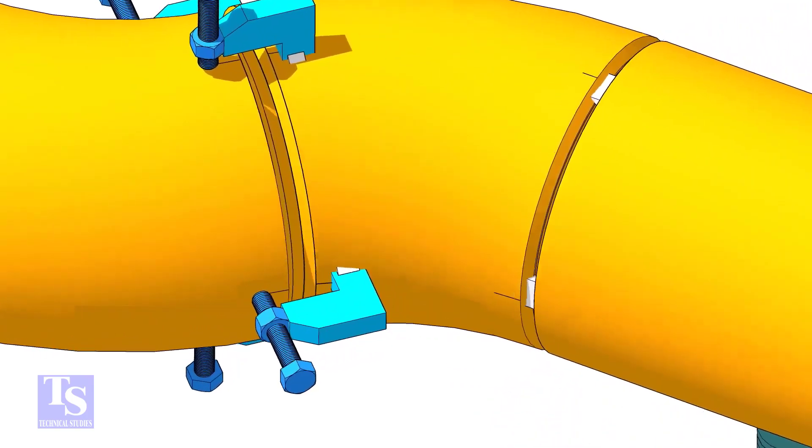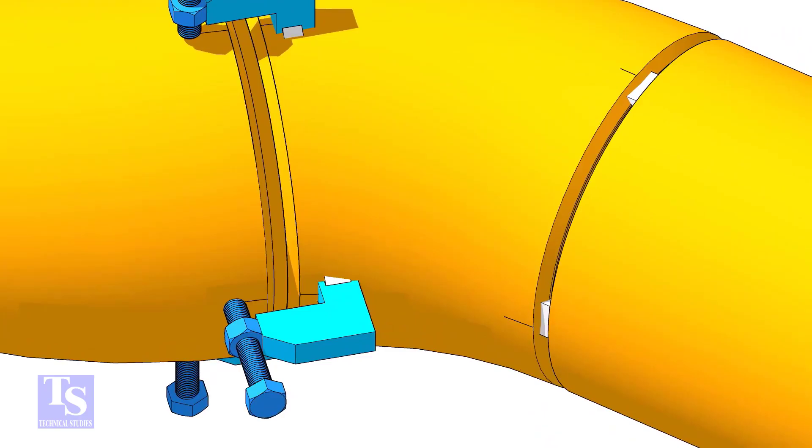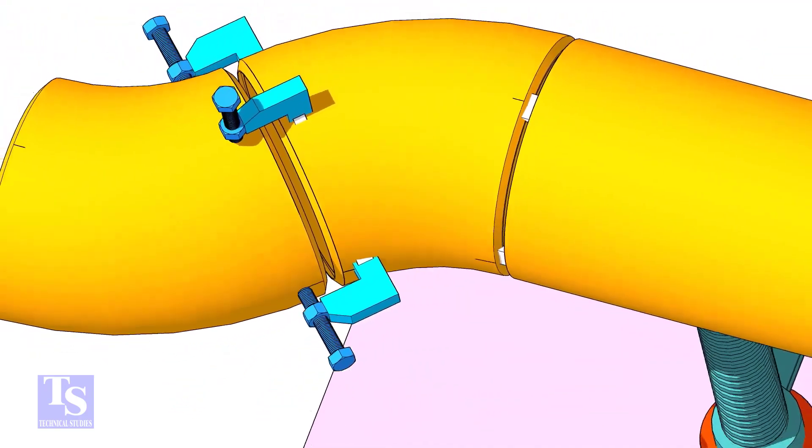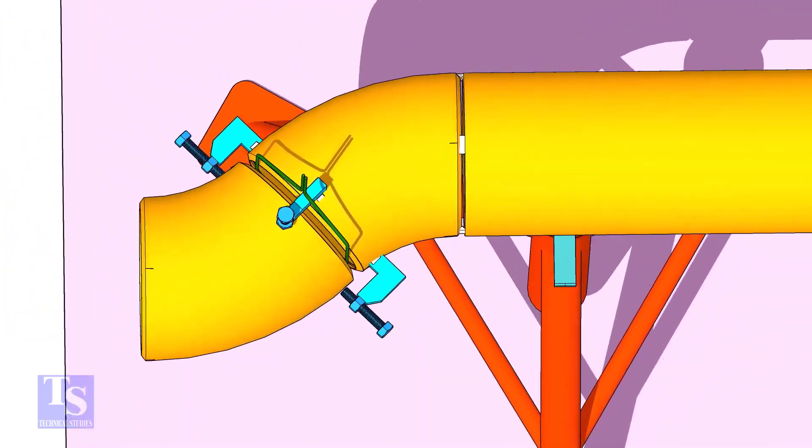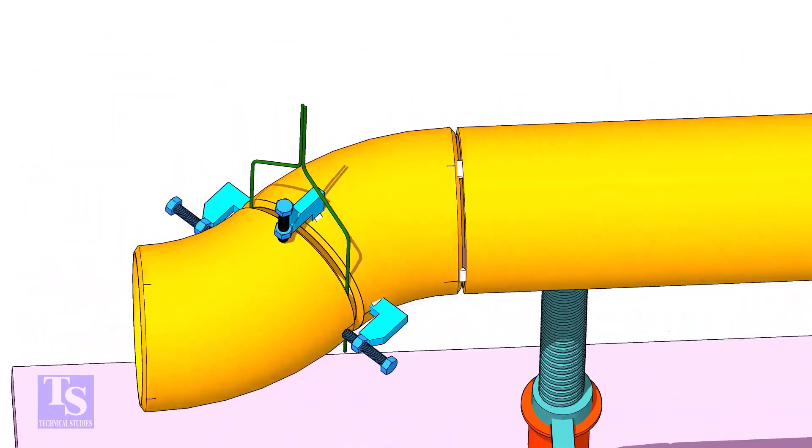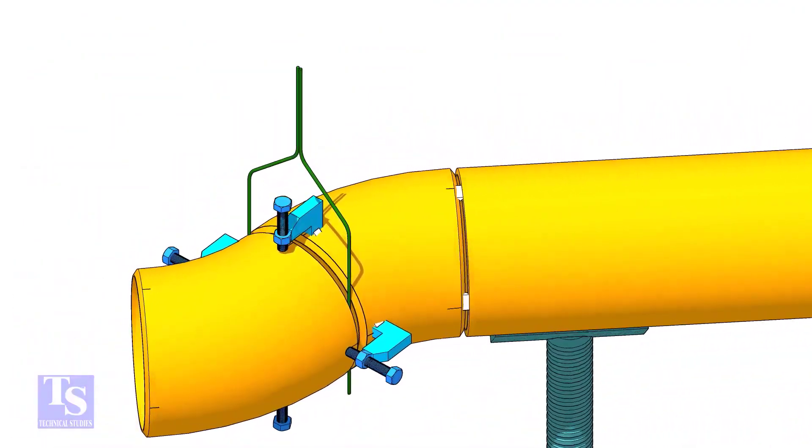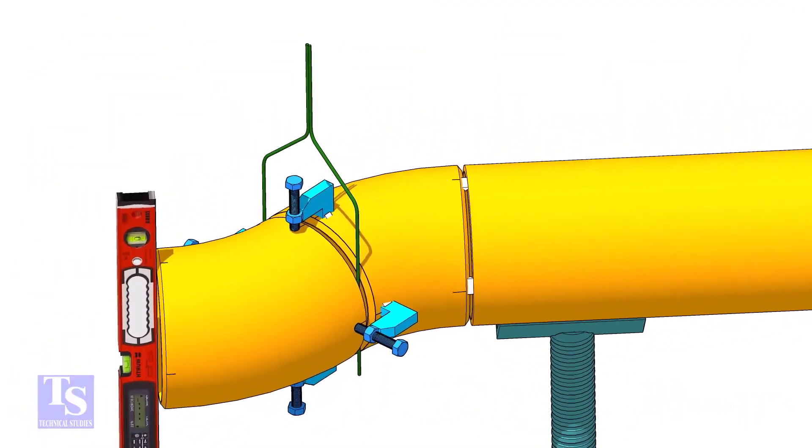Put the gap rod between the elbows and maintain the required gap. Check if the face is level.